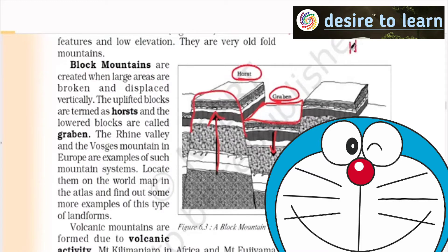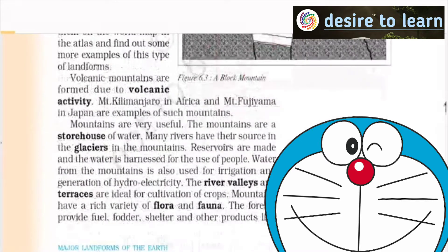The one which looks like a mountain is called as Horst. You have to remember the terms Horst and Graben. Graben means valley — very, very important. We also have to know that there are volcanic mountains. Mount Kilimanjaro, which is in Africa, Mount Fujiyama, and many volcanic mountains have already been shown with plate tectonics.